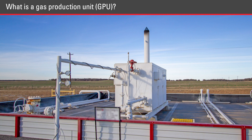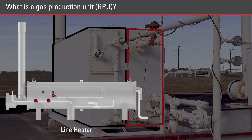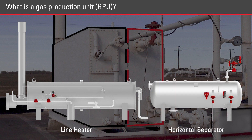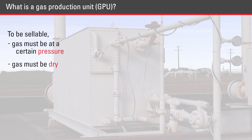A gas production unit, or GPU, is actually two pieces of equipment joined together inside one housing: a line heater and a horizontal separator. To be sellable, gas must be at a certain pressure and must be dry. Upstream producers use GPUs to accomplish these two things — it reduces the pressure and dries the gas.